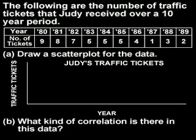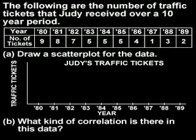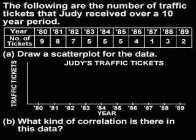The years listed along the x-axis will be the same as those listed in the table: 80, 81, 82, 83, 84, 85, 86, 87, 88, and 89. Along the y-axis, we need a scale — I would suggest using a scale starting with zero, with intervals of 1.